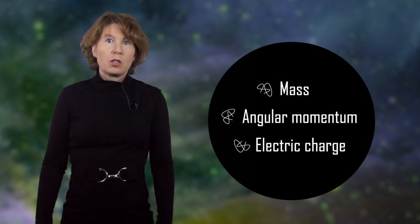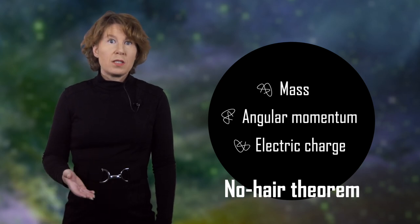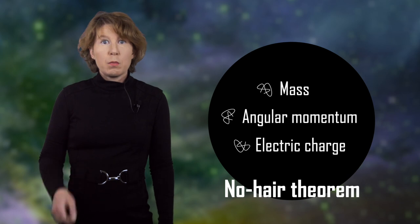First things first — what's the black hole information loss paradox? Imagine you have a book and you throw it into a black hole. The book disappears behind the horizon, the black hole emits some gravitational waves, and then you have a black hole with a somewhat higher mass. And that's it. This is what Einstein's theory of general relativity says. In Einstein's theory of general relativity, black holes are extremely simple. They are completely described by only three properties: their mass, angular momentum, and electric charge. This is called the no-hair theorem. Black holes are bald and featureless, and you can mathematically prove it.